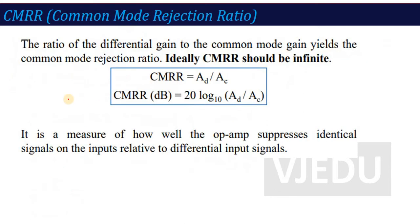The next characteristic of op-amp is CMRR, which we have already covered in detail in the last lecture. It measures how well the operational amplifier rejects the common mode signal. It is mathematically defined as AD upon AC, or in decibels, 20 log base 10 of AD by AC. It is a measure of how well the op-amp suppresses identical signals on the inputs relative to the differential input signal.